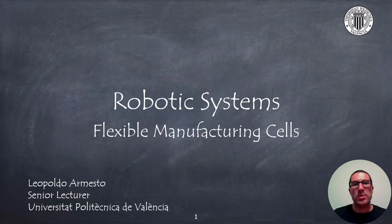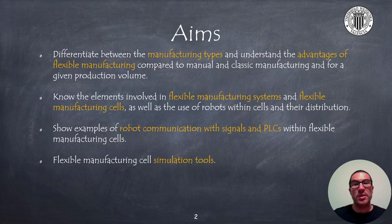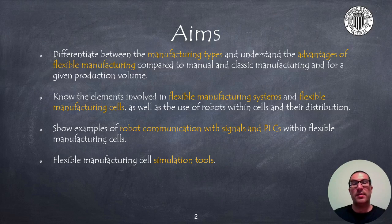In this presentation I will talk about flexible manufacturing cells and the use of robots in these cells. The aims of the presentation are, on one hand, to know and differentiate different types of industrial manufacturing in order to understand the advantages that flexible manufacturing offers compared to manual or classic manufacturing models for a given production volume. I will also explain the elements involved in flexible manufacturing systems and specifically flexible manufacturing cells, as well as how robots are used within these cells and their distribution.